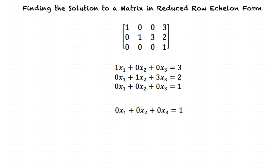Since the bottom equation states that 0x1 plus 0x2 plus 0x3 is equal to 1, and 0 does not equal 1, the matrix will have no solution.